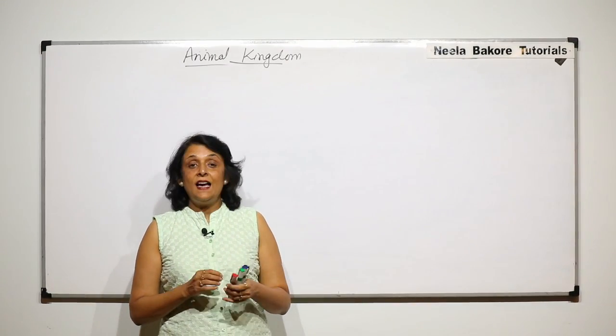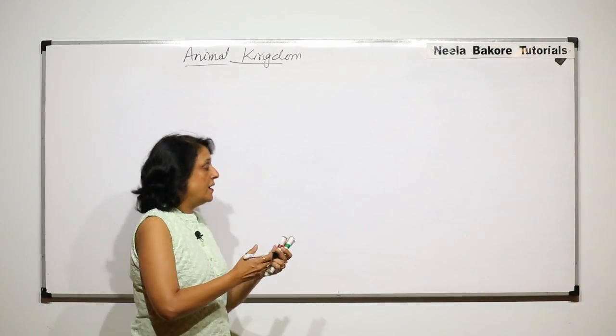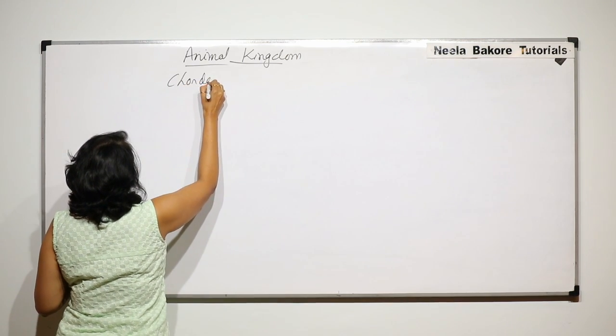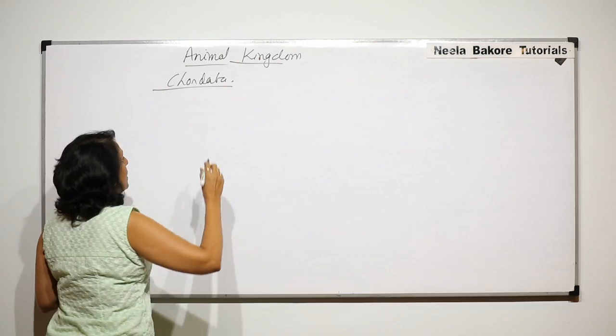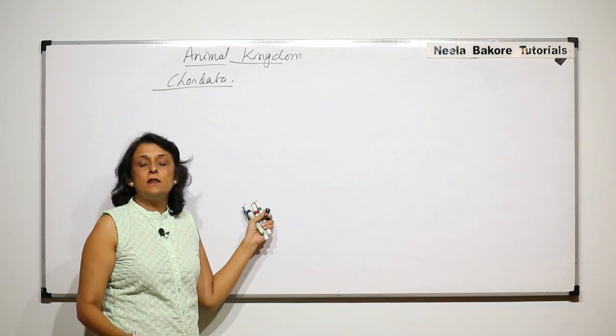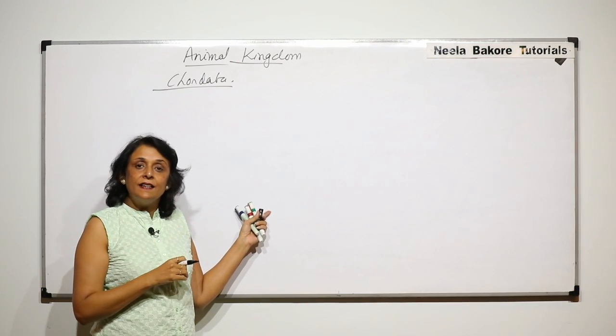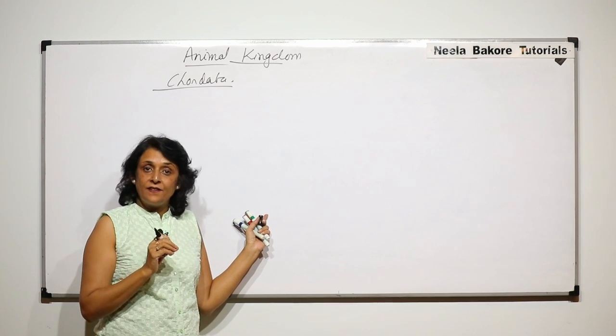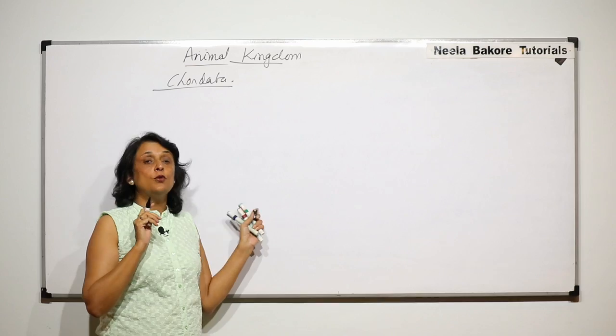We will now take up the last phylum in this animal kingdom, the phylum Chordata. Before coming to the various subphyla and classes under this, we will first try to understand the classification with some specific characteristic features of each group.